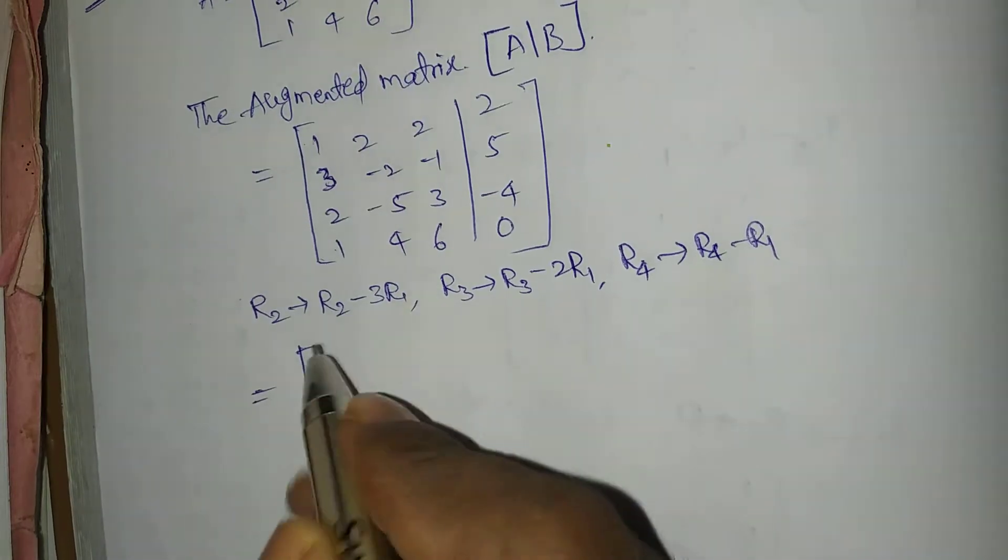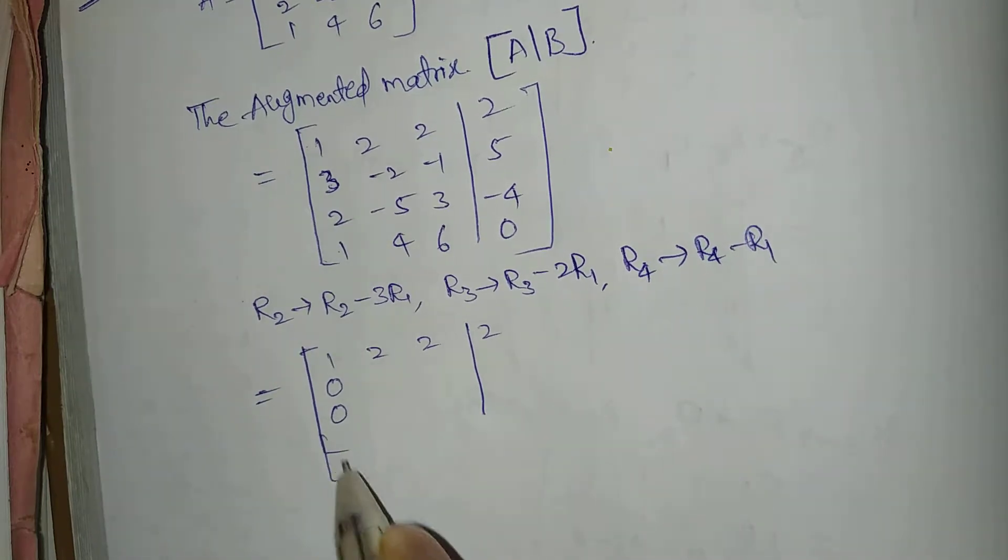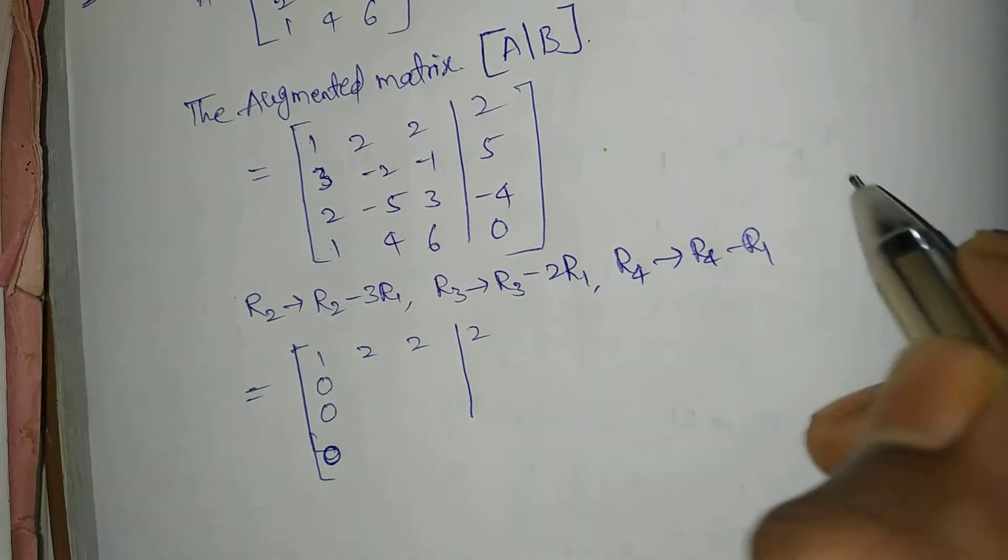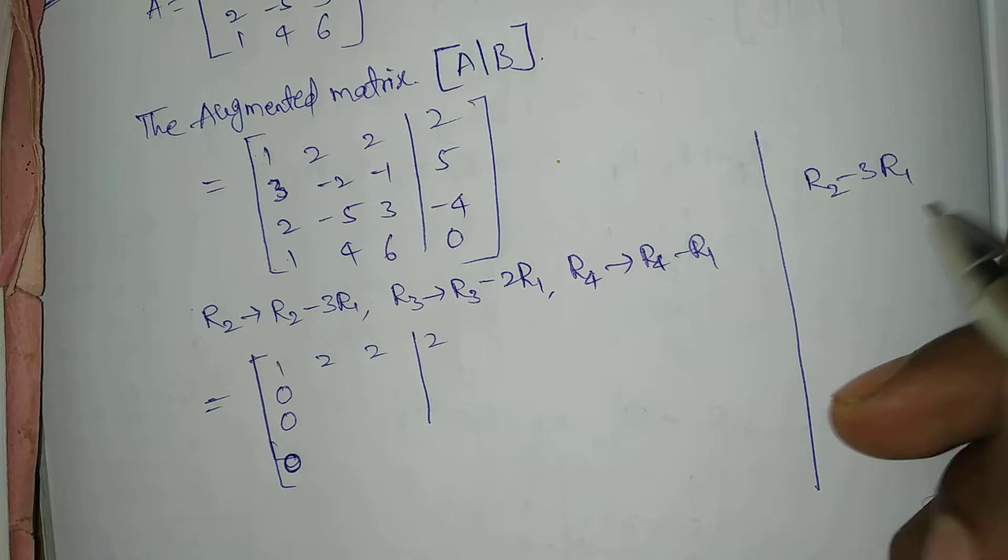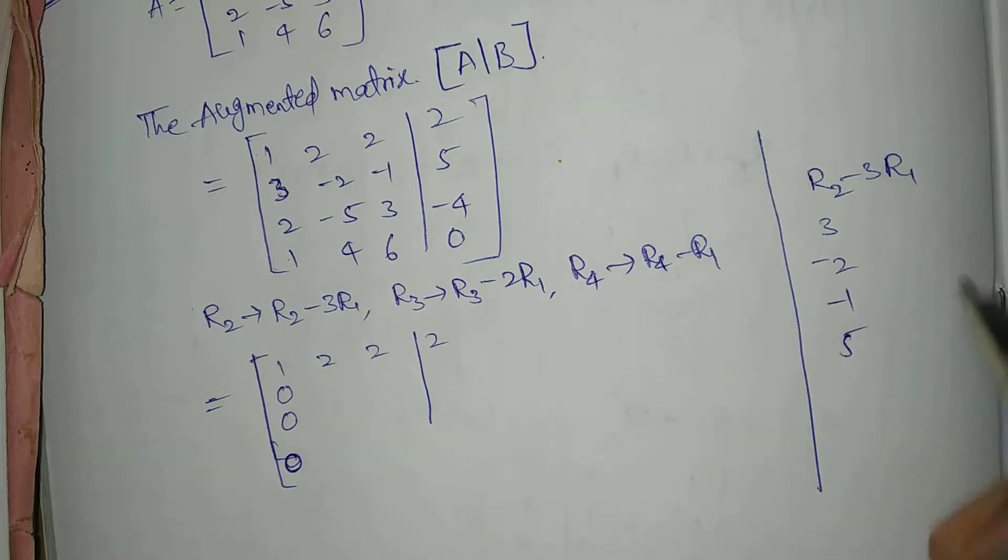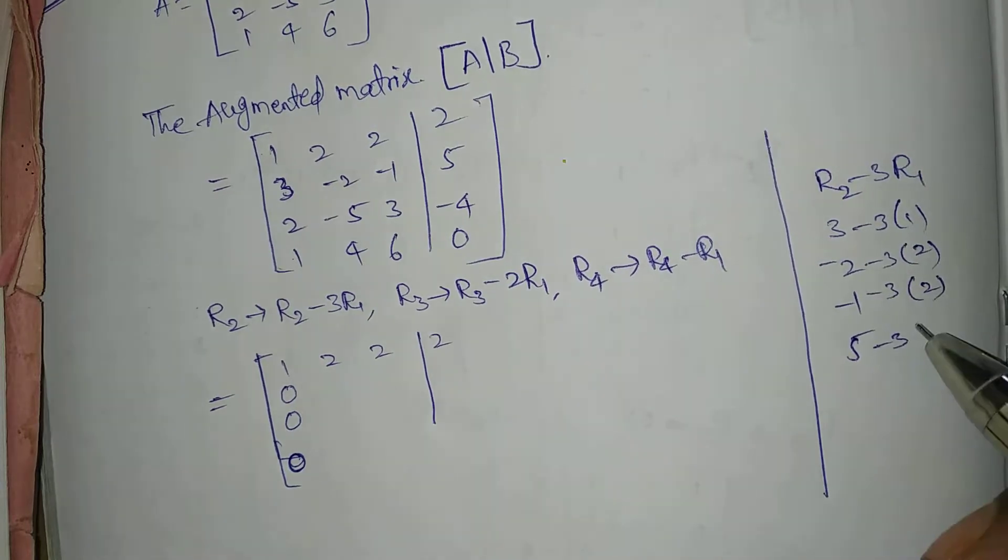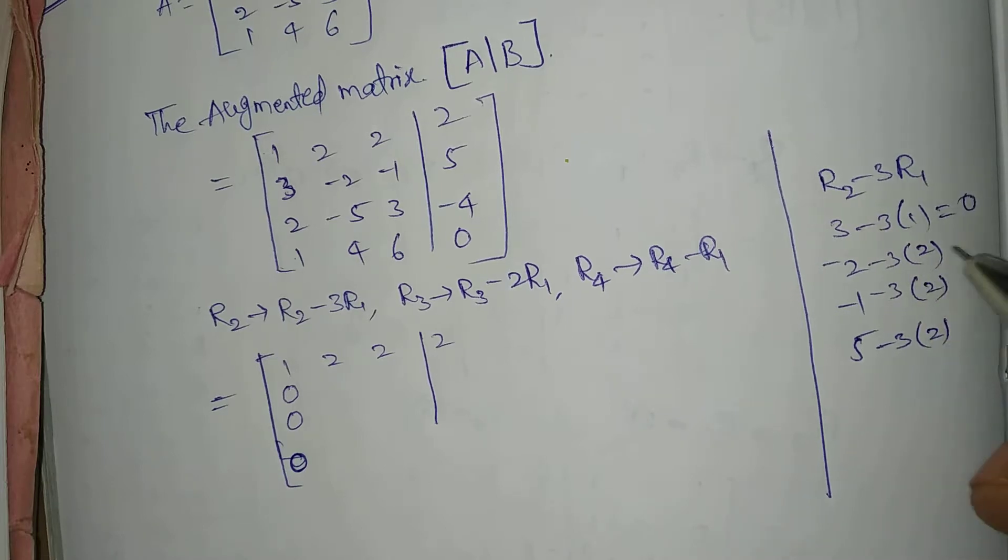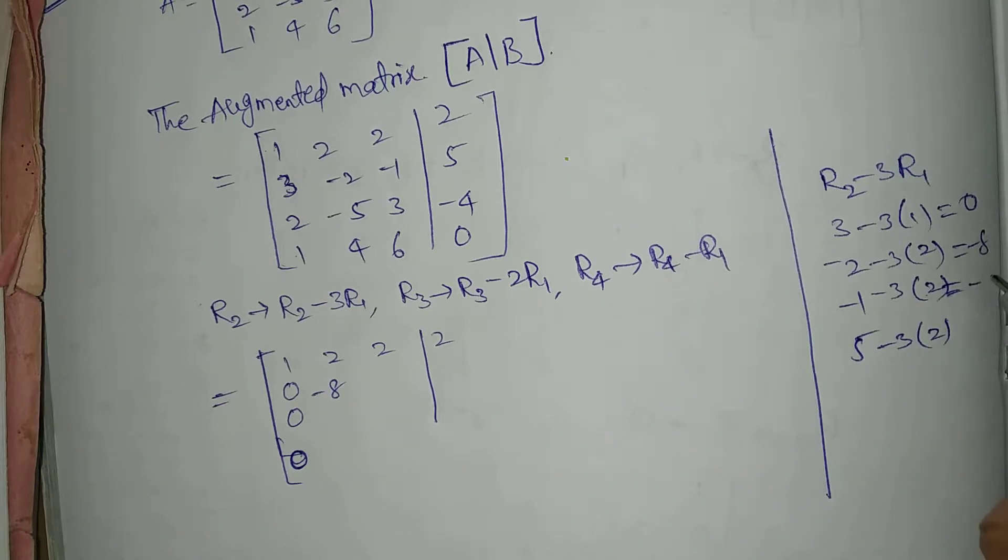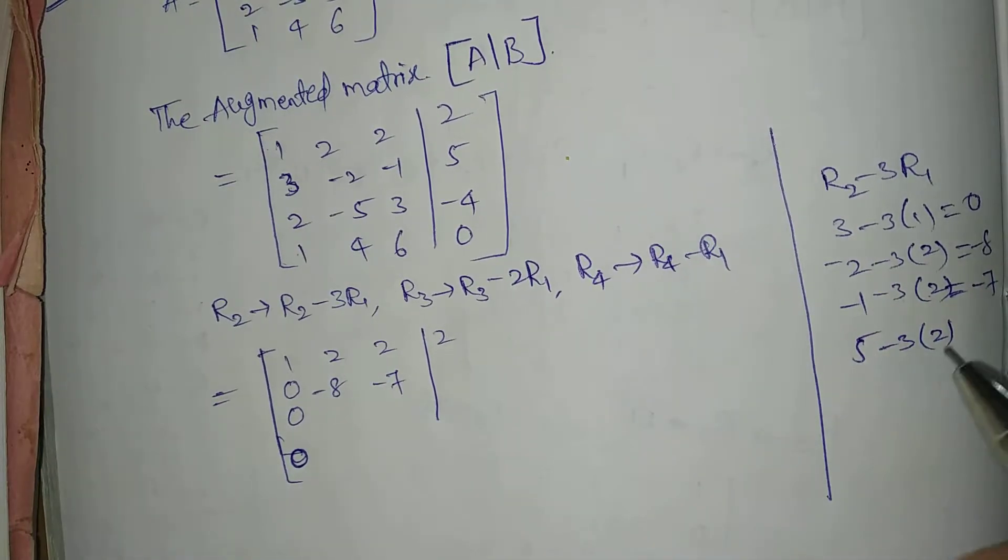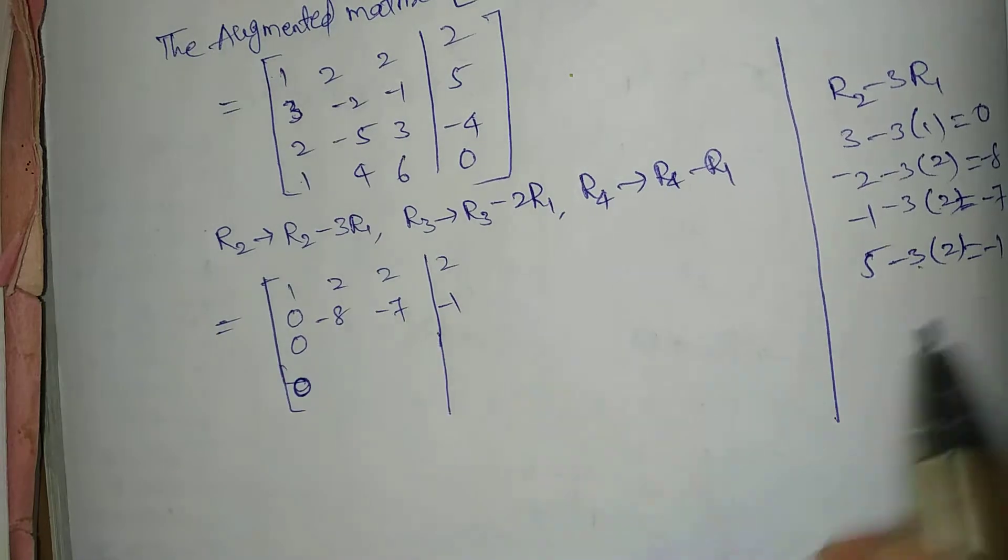Now here, 1, 2, 2, 2. 3 minus 3 is 0, 2 minus 2 is 0, 1 minus 1 is 0. R2 minus 3 R1: 3 minus 2 minus 1, 5. 3 into 1 minus 3, into 2. That gives 0, minus 8, minus 7, minus 1.